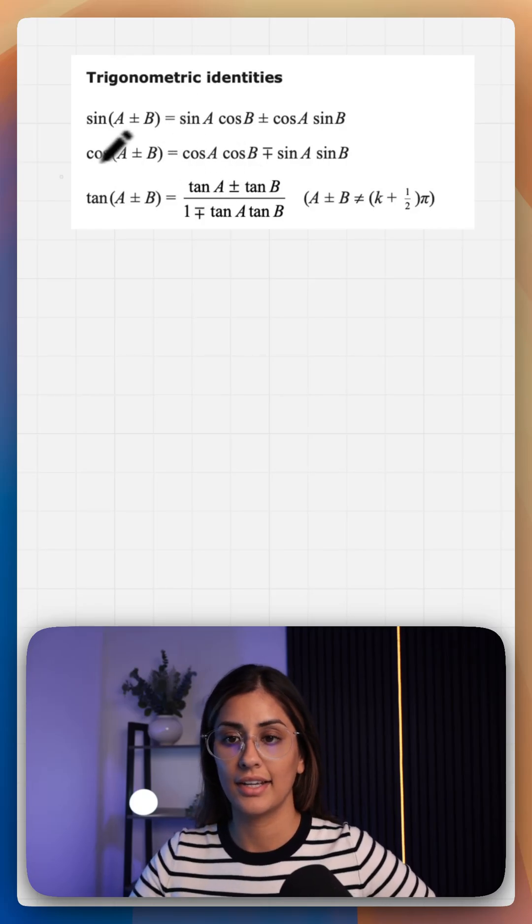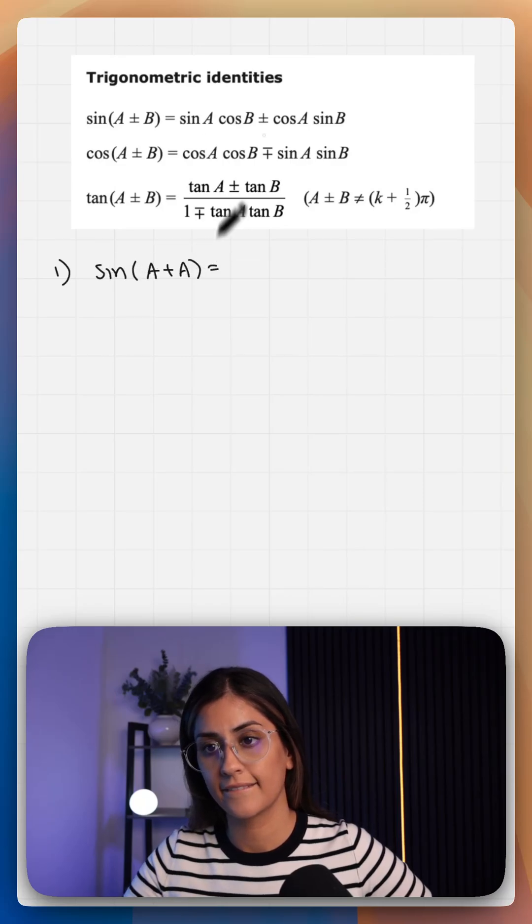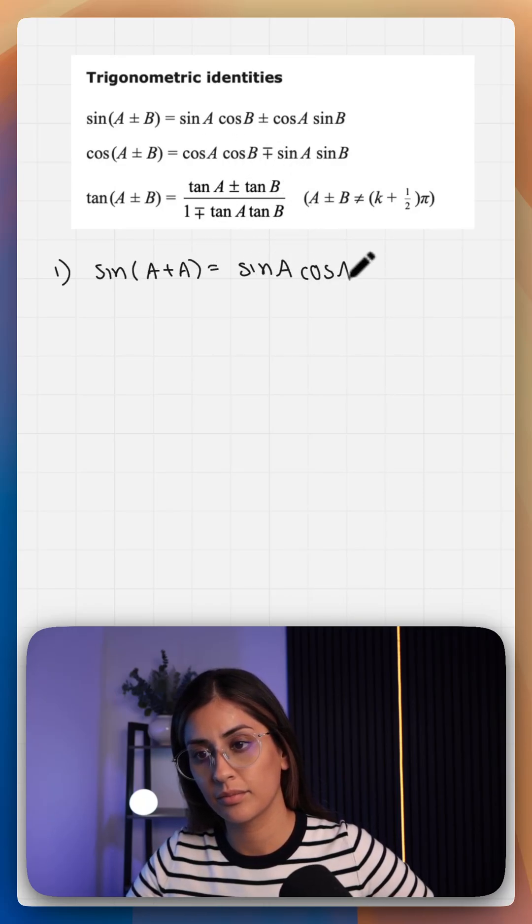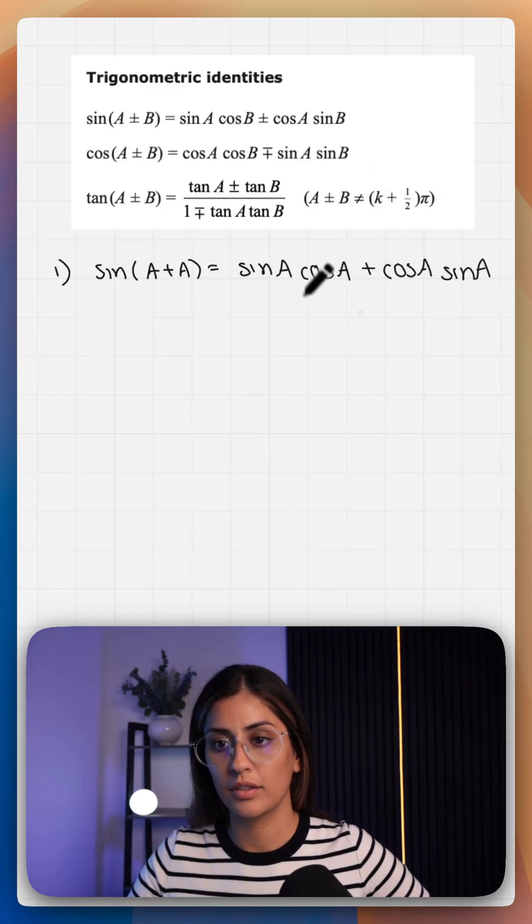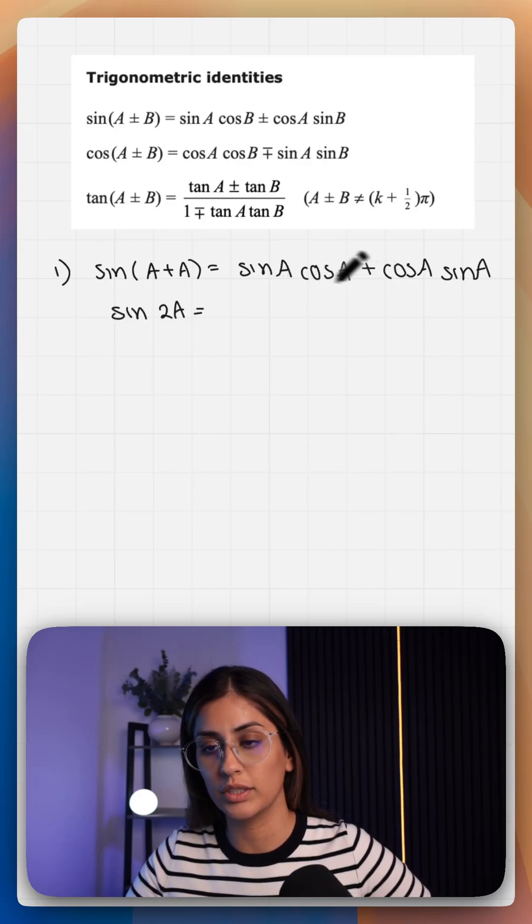We do sine a plus a for the first one, and that gives us sine a cos a plus cos a sine a. If we simplify, that gives us sine 2a is equal to these two are exactly the same: 2 sine a cos a.